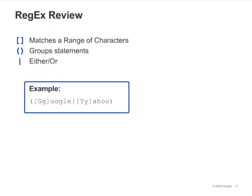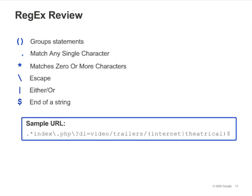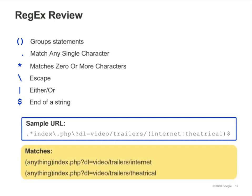Let's review. In the first example, we've created an expression that will match the strings Google or Yahoo, regardless of whether or not they are capitalized. Here we've created an expression that will match URLs for internet and theatrical movie trailers. The first part of the expression indicates that the URL can begin with anything. Then the expression specifies that the URL must end with "index.php?dl=video/trailers/" followed by either "internet" or "theatrical". The dollar sign ensures that any URLs longer than this won't get included in the match.